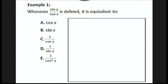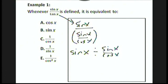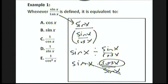Let's look at an example. Whenever sine x over tan x is defined, it is equivalent to what? We rewrite tan x as sine x over cosine x, then rewrite this fraction as division. When we divide fractions, we flip the one on the right and multiply. We can cancel out the sine x's to get cosine x, which is choice A.